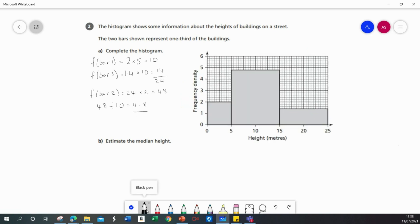Now the second part of the question asks to estimate the median height, the middle height. All together I've got 24 plus 48, or 72 is my total frequency. So the middle of that will be 36. So I need to find the height when the frequency is 36.